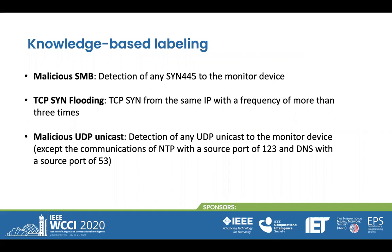The next thing I will share with you is the knowledge-based library methods. In this research, we adopted three knowledge-based approaches to label feature maps of the network. We consider these three types of anomalies for detection by applying the corresponding rules to the network traffic: malicious SMB, TCP SYN flooding, and malicious UDP unicast.